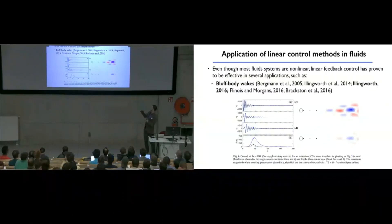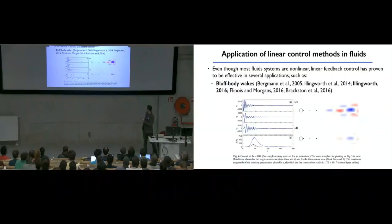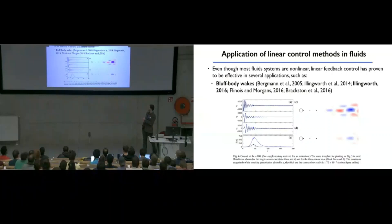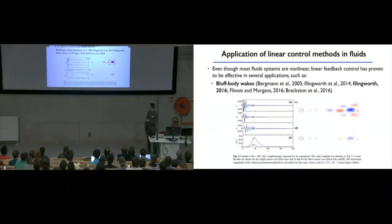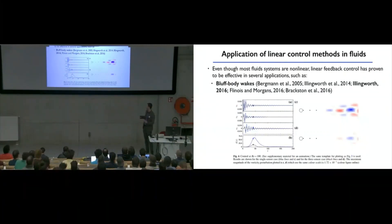One can also look at control of bluff bodies. So, there's several works on this, of which these are only some. And this is a plot from Illingworth where, for control, I think we use blowing and suction on the cylinder, and the authors are measuring at certain locations in the wake, and managing to stabilize flow over a cylinder at a Reynolds number of 100. And I think this is using H infinity control, so one of those robust loop shaping variants, but still just using linear modeling and control methodologies.